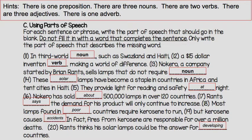Solar describes the kind of lamps — describing a noun means it's an adjective. 'They provide light for reading and safety at night' — at is a preposition. 'Nocaro has sold about 500,000 lamps in over 120 countries' — about is describing how many were sold; sold is a verb, so a word that describes a verb is an adverb. 'Rance says the demand for his product will only continue to increase' — says is an action, it's a verb.